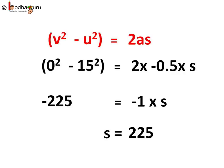v is equal to 0, u is equal to 15 meter per second, and a is equal to minus 0.5 meter per second square. So it becomes 0 square minus 15 square is equal to 2 into minus 0.5 into s. So minus 225 is equal to minus 1 into s, so s equals 225 meter. It will stop at 225 meters, safely before the red signal which is 300 meters away.